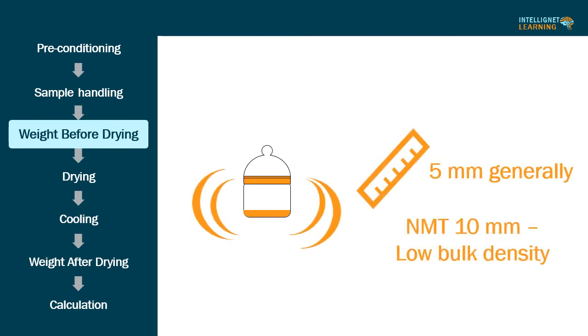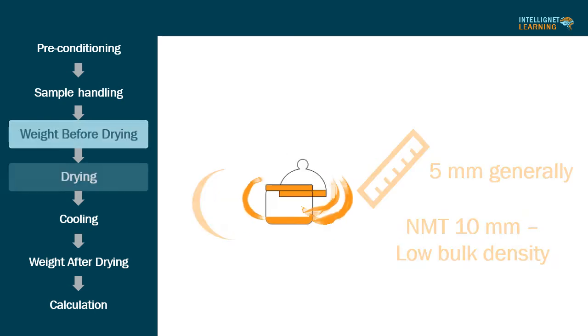By gentle sidewise shaking, distribute the test specimen as evenly as practicable to a depth of about 5 millimeters generally, and not more than 10 millimeters in the case of low bulk density materials.